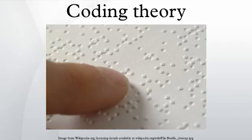The binary Golay code was developed in 1949. More specifically, it is an error correcting code capable of correcting up to three errors in each 24-bit word, and detecting a fourth.